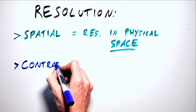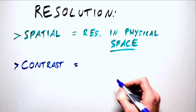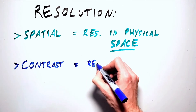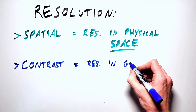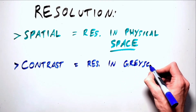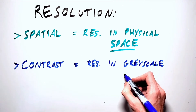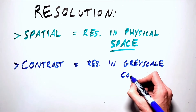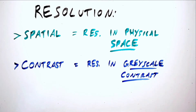Contrast resolution, or low contrast resolution, refers to the ability to differentiate between two objects of similar density. Contrast resolution may also be referred to as low contrast resolution because it relates to differentiating between lowly contrasting objects.